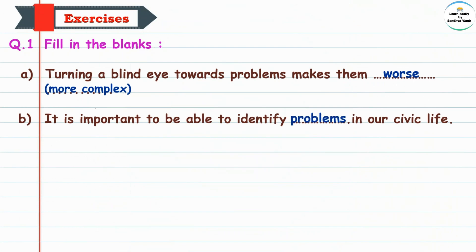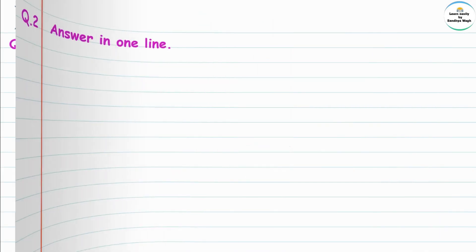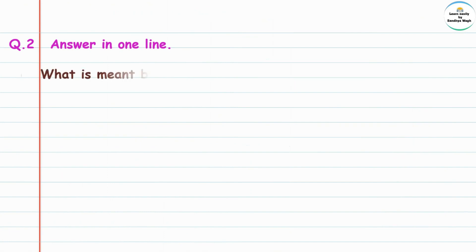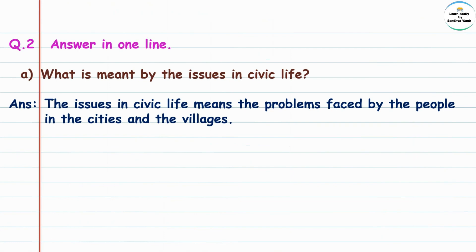Question two: Answer in one line. What is meant by the issue in civic life? Civic life means nagri jivan (urban/civic living). The issues in civic life means the problems faced by the people in the cities and the villages.